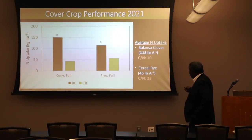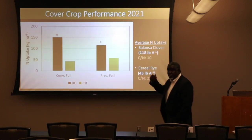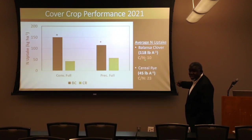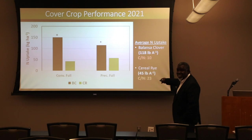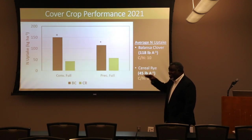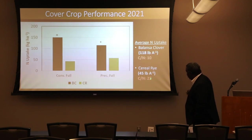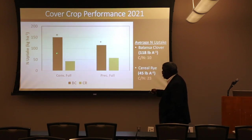In southern Indiana, we got about 45 to 60 pounds per acre of nitrogen in Balanza Clover biomass with almost 2,000 pounds per acre of carbon. For cereal rye, about 2,400 pounds per acre with 960 pounds of carbon. Balanza Clover C:N ratio was 10 — meaning fast turnover. Cereal rye was 23 — it returns slower. Cereal rye is stable and performs similarly no matter where you plant it, but it has that high C:N ratio.